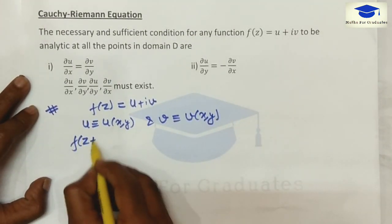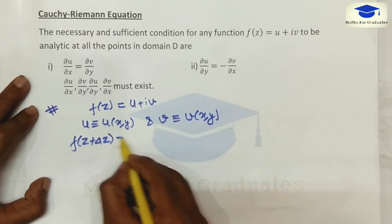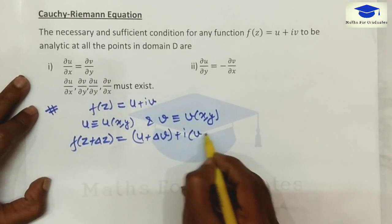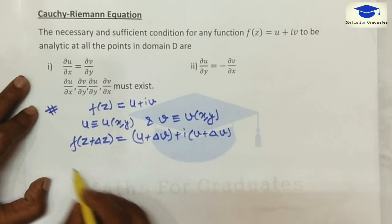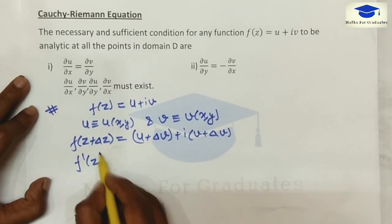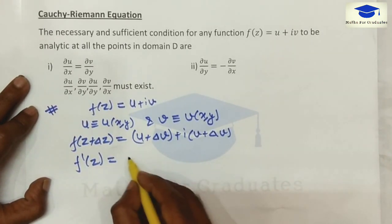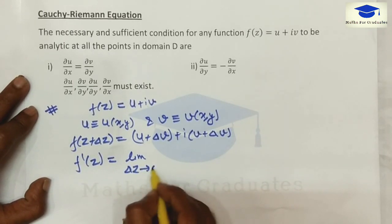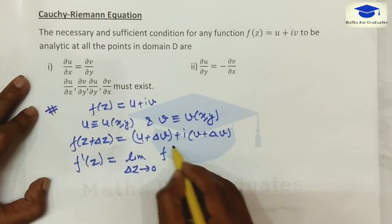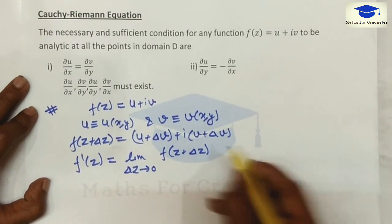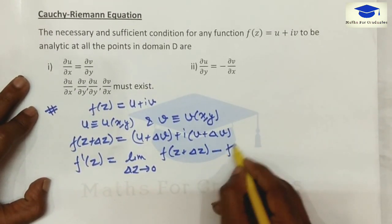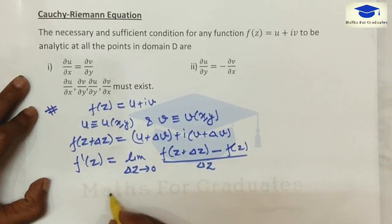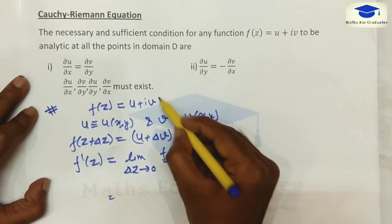Now, f(z + Δz) is given by (u + Δu) plus i times (v + Δv). From the first principle, f'(z) is given by the limit as Δz tends towards 0 of f(z + Δz) minus f(z), all over Δz. Putting in the values from equations 1 and 2: